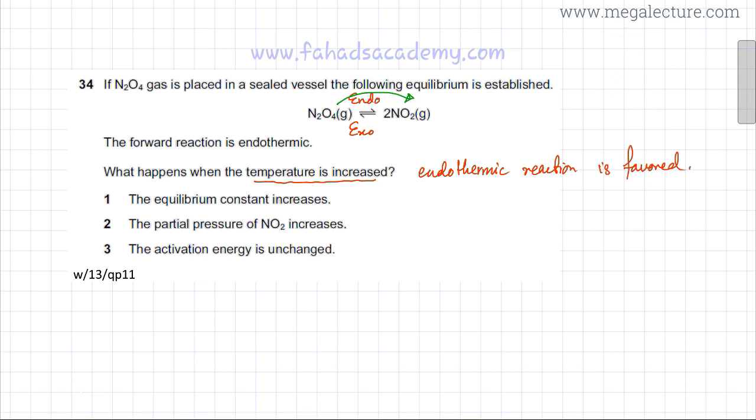The options are: the equilibrium constant increases. The equilibrium constant is the ratio of products, so the equilibrium constant Kc is the ratio of the concentration of products divided by the concentration of reactants.